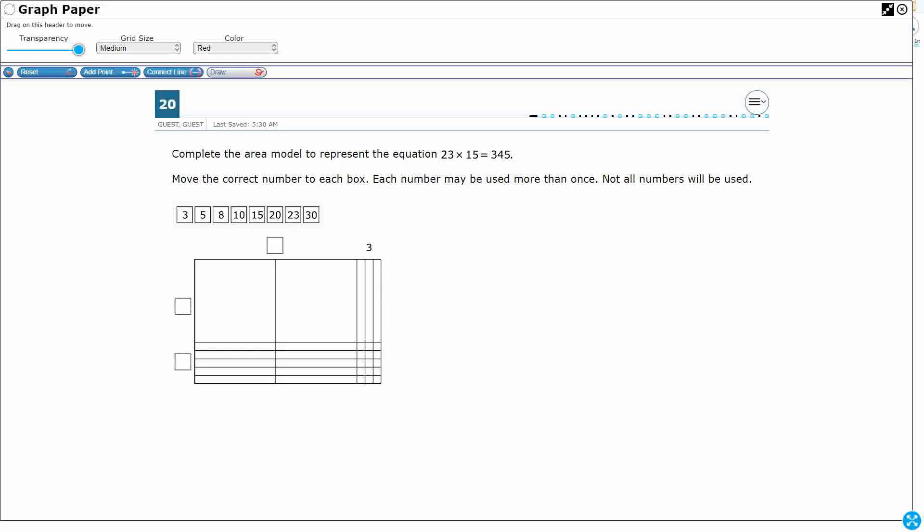So we have an area model here and they give us this equation: 23 × 15 = 345. Now, here's the interesting thing. They give us a little bit of a clue here because they give us that three. Now, how do we know this is a three? Well, they give us the three, but take a look.